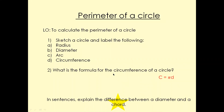We know from last lesson the formula to calculate the circumference of a circle is c equals pi times d. So c is the circumference and d is the diameter.